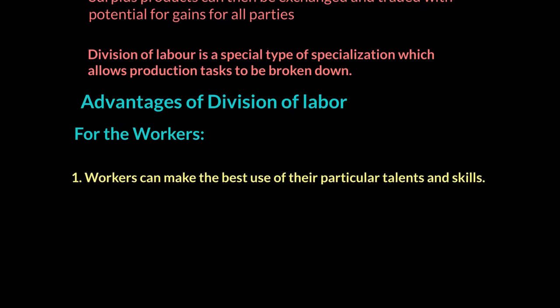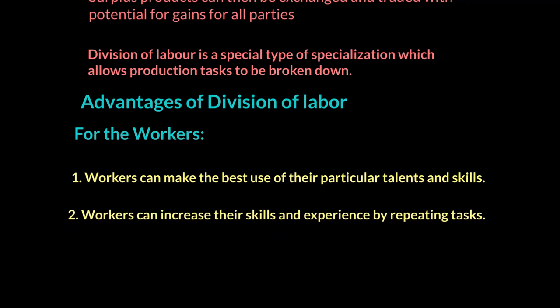For example, in the table scenario, if I'm really good at cutting wood I will only do that task and not assemble the table. By giving each worker a task they're good at, output goes up. Secondly, because workers repeat the task day in, day out, they can increase their skills and experience through learning by doing.